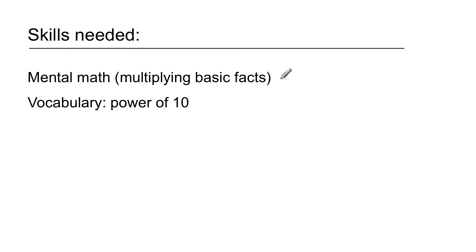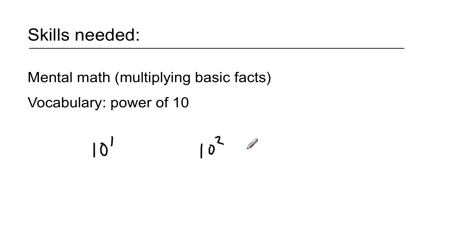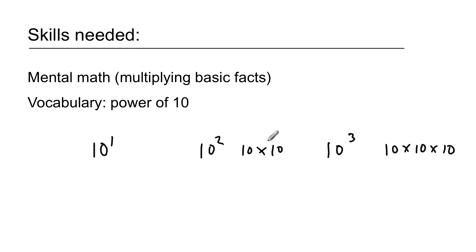You need to know your basic multiplication facts. And you'll hear 'powers of ten' — it sounds more important and harder than it really is. One power of ten is just multiplying by ten, written as ten to the first power. Two powers of ten is written as ten to the second power, and that just means multiplying by ten twice. Ten to the third power is three powers of ten — ten times ten times ten, three instances of ten.